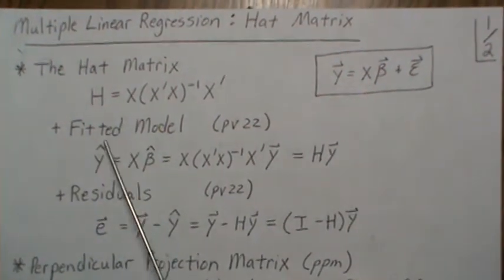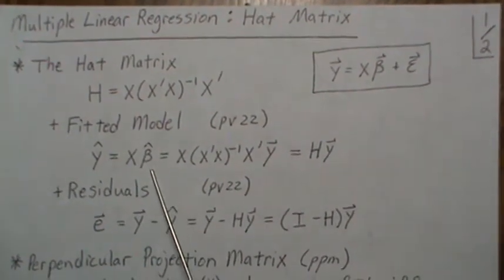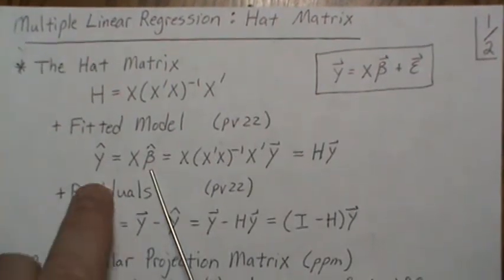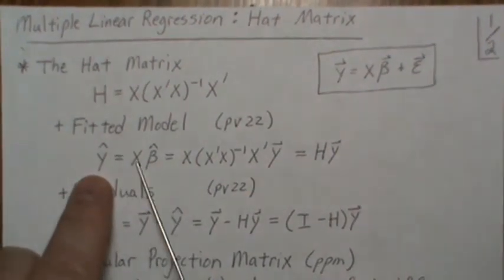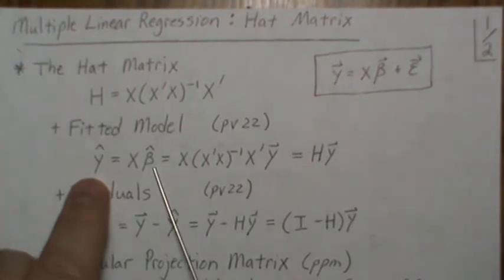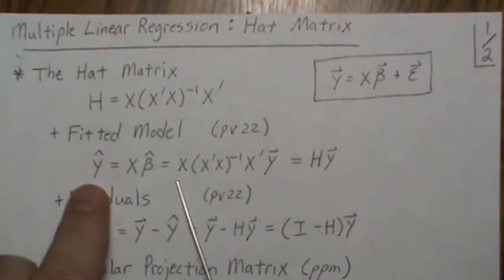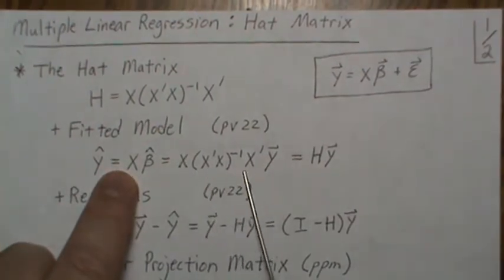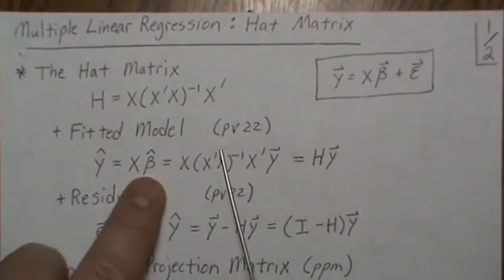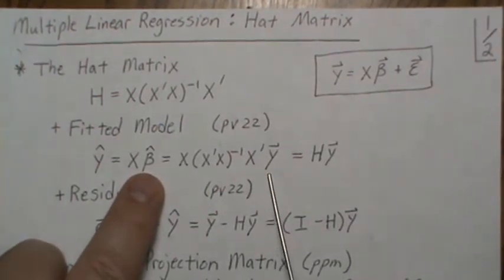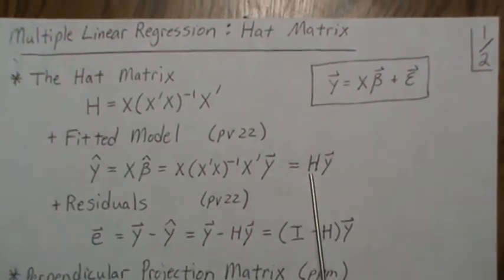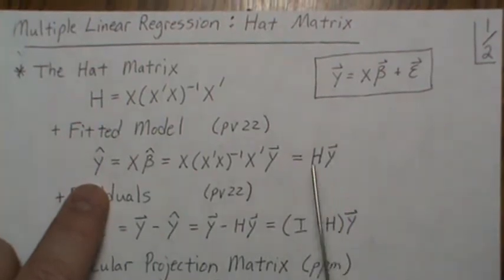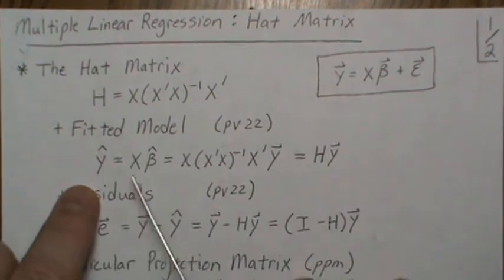Here's the reason why. When we derive the fitted model — that means the least squares estimate for our beta parameters — so it's x beta hat, we call that the fitted model y hat. The least squares estimates for beta, from video 22 in the playlist, is this times y. So we generically call everything in front of y h, and that's the hat matrix. The reason they call it the hat matrix is when you pre-multiply y by h you put a hat on y — so it puts a hat on y, it's a hat matrix.